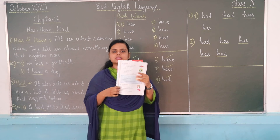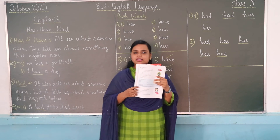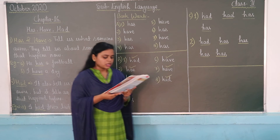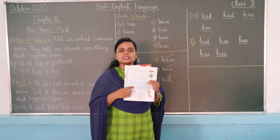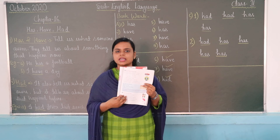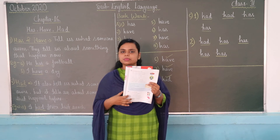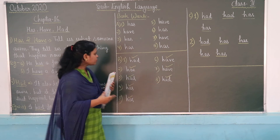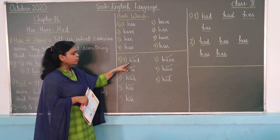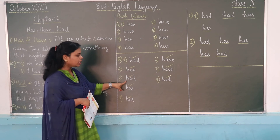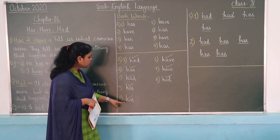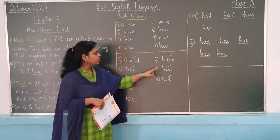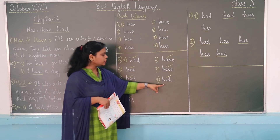Just below Exercise A, you will find Exercise B. This says: take the correct word from the bracket — Has, Have, or Had — whichever is suitable according to the sentence. The answers are: first — had, second — has, third — had, fourth — has, fifth — has, sixth — have, seventh — have, eighth — had.